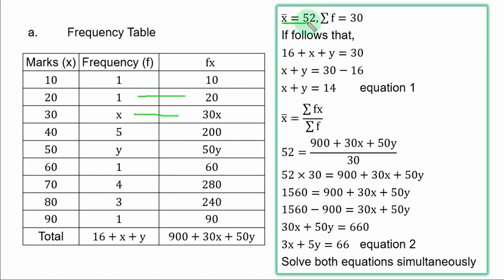From the question, the mean x̄ is equal to 52. There are 30 students. That means sum of frequency is 30. It follows that 16 plus x plus y is equal to 30. If you transfer 16 over, you have x plus y equal to 30 minus 16. And you have x plus y equal to 14. Let's call that equation 1.